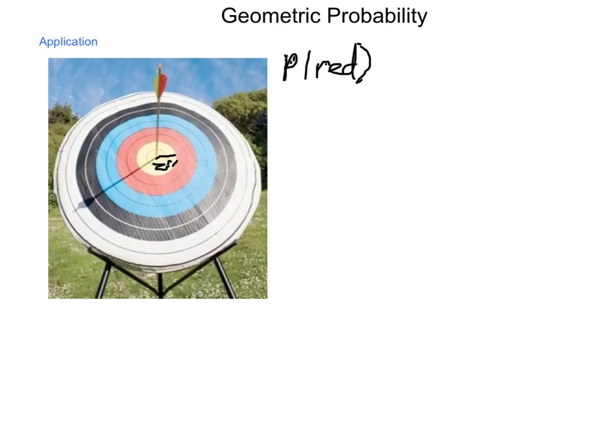The way we're going to calculate this is we're going to find the area of the red and divide that by the total area possible. Now, calculating the area of the red is going to be a little bit interesting because what we have to do is find the area of the circle for the outer edge and subtract the area of the inner circle. What is the radius of that outer circle?